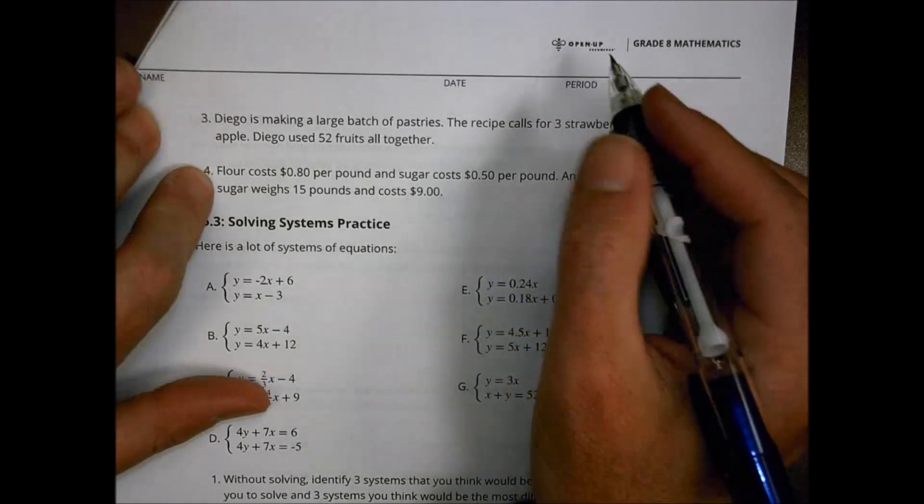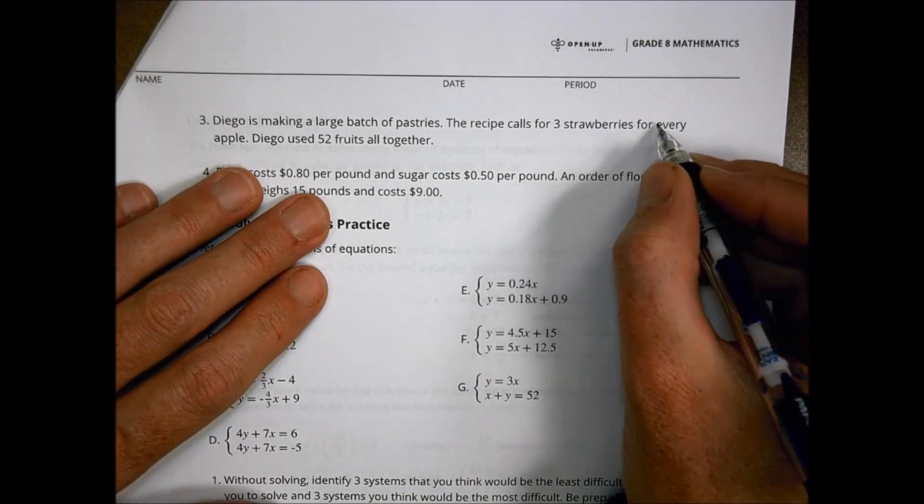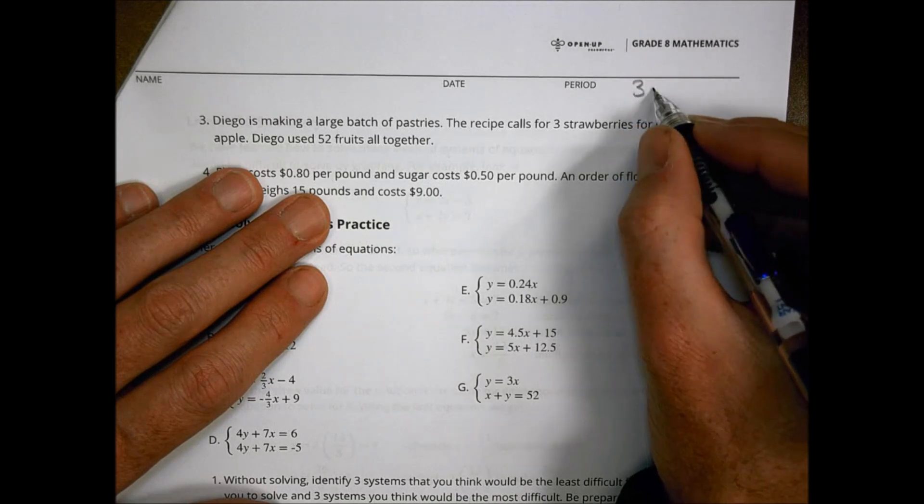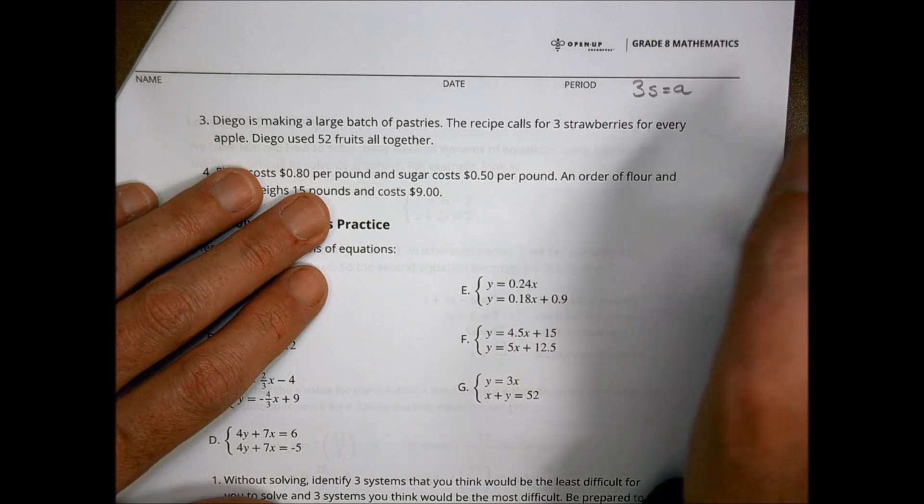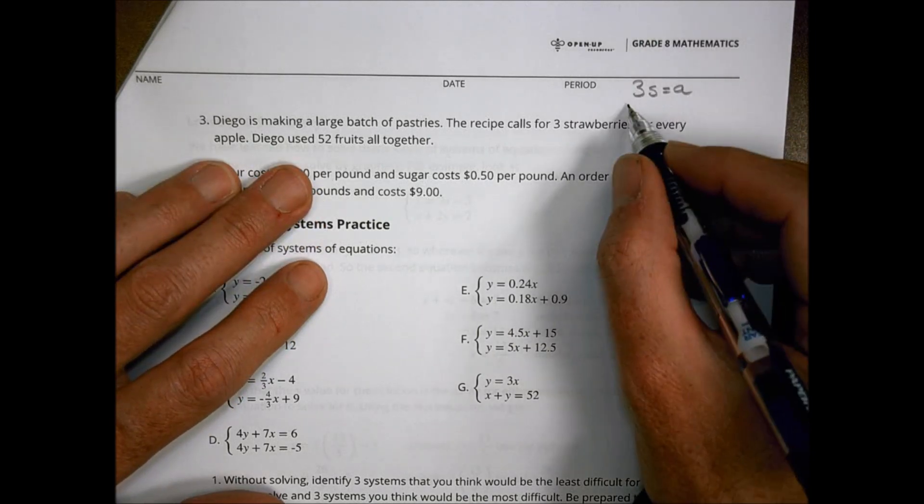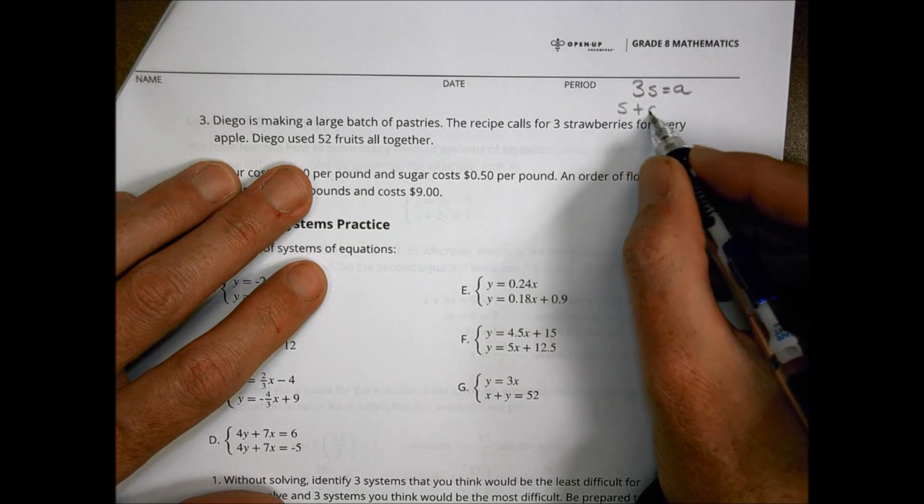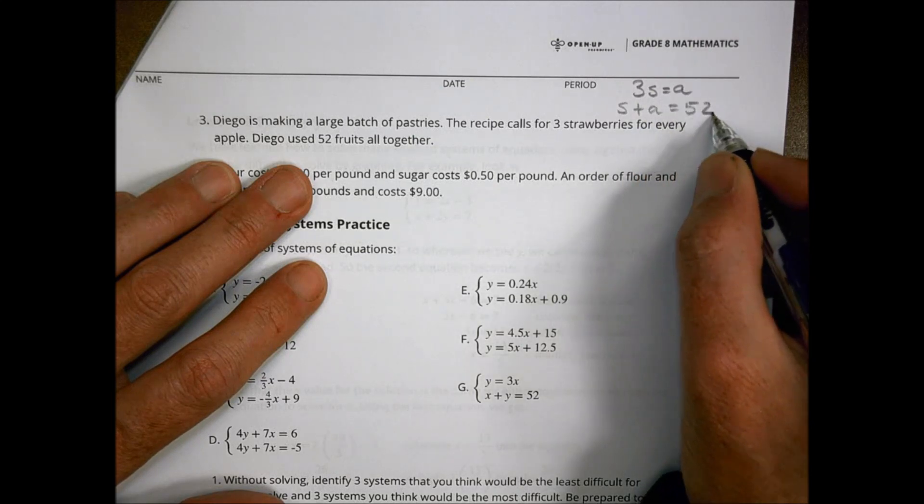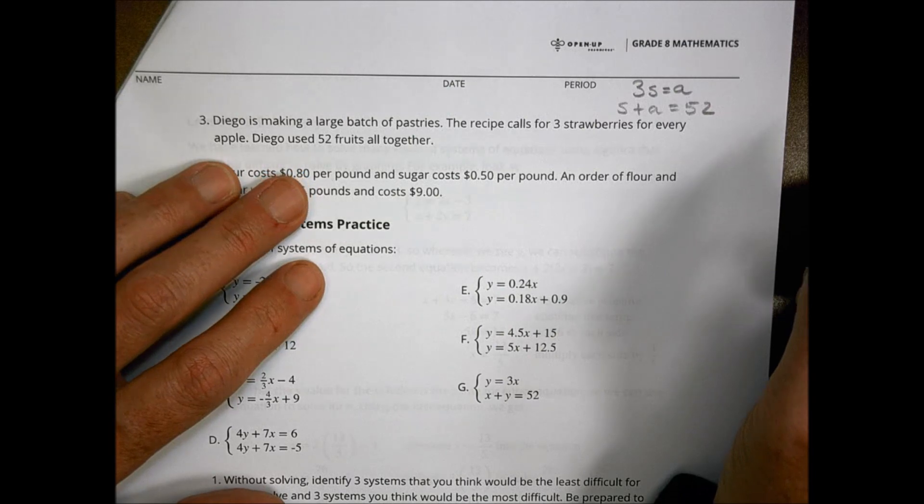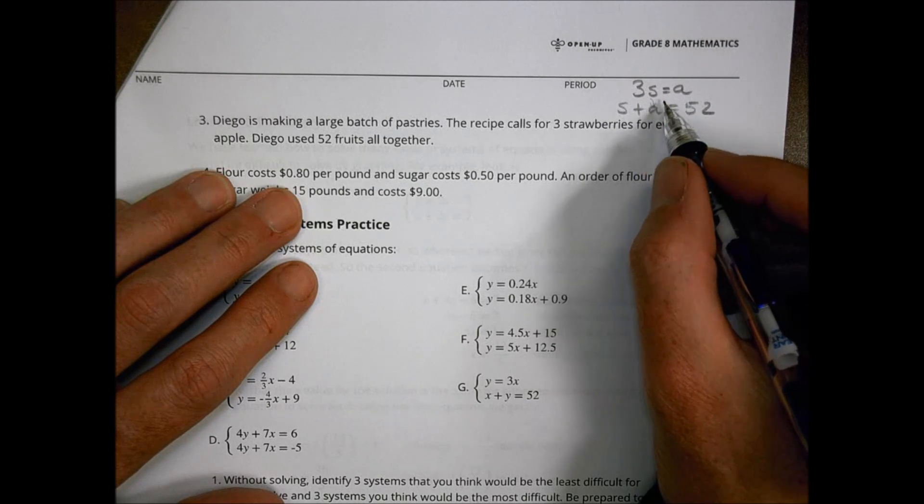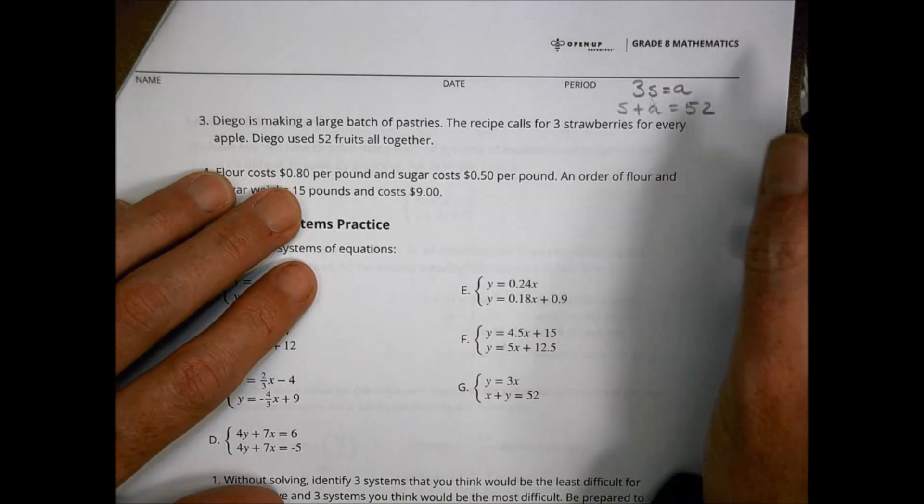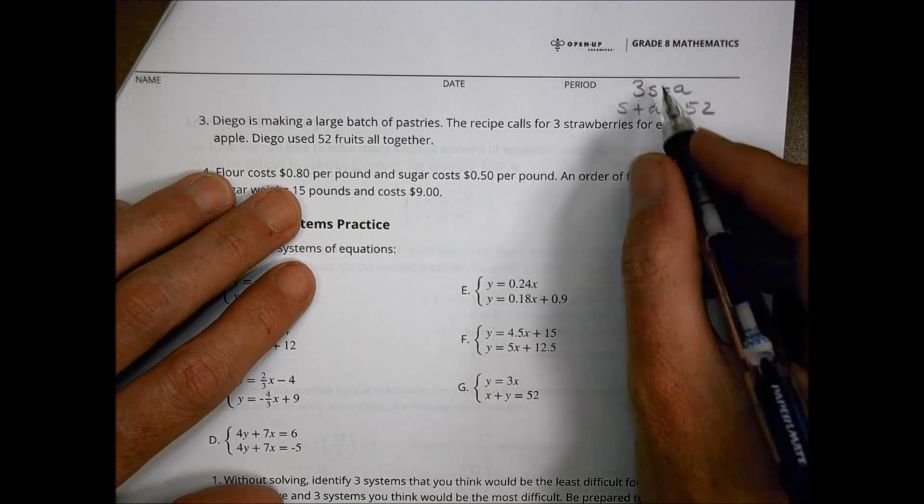Let's look at number three. Diego is making a batch of pastries. The recipe calls for three strawberries for every apple. Diego used 52 fruits altogether. So strawberries plus apples equals 52. Those become the two equations I would have. Now from this, I could use some substitution. I could substitute three S in the place of A and solve for S and then go back and solve for A. Let's do it real quick, just for fun.